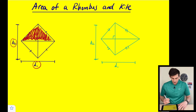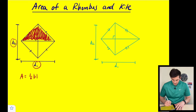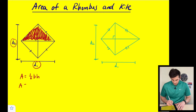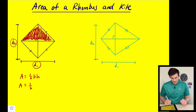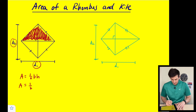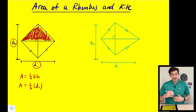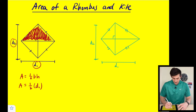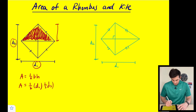If we think about this rhombus as two separate triangles — I'm coloring in this first triangle here at the top — think about the area of a triangle: area is equal to one half base times height. For this triangle shaded in red, the base would be the entire horizontal diagonal, so that would be diagonal number one, and the height would be half of our second diagonal, since it only goes from the center to the top. So this would be half of diagonal two.